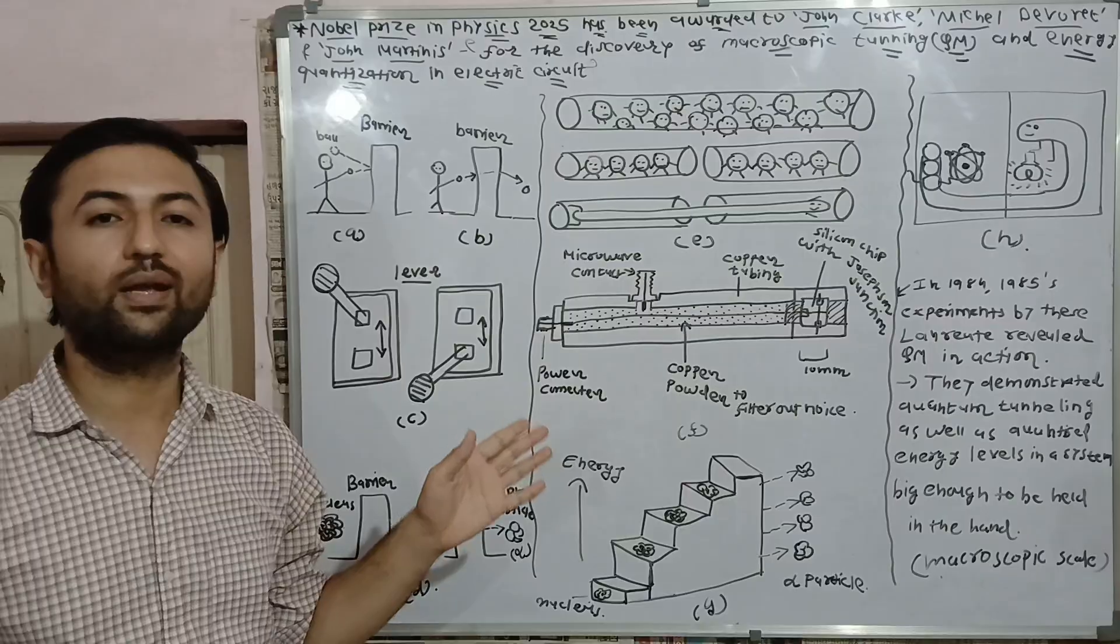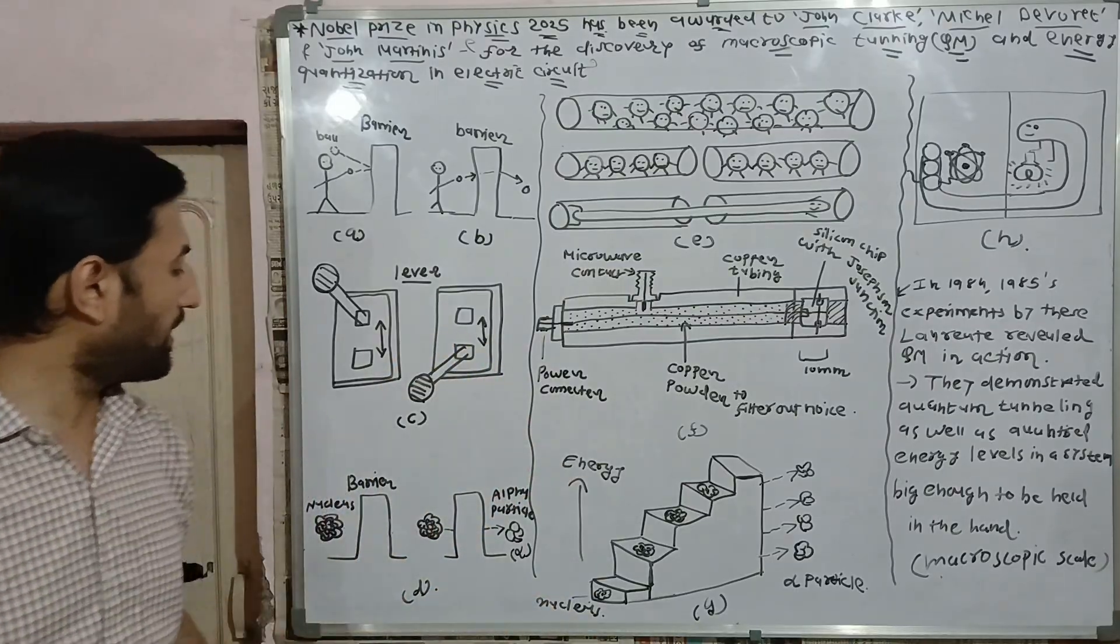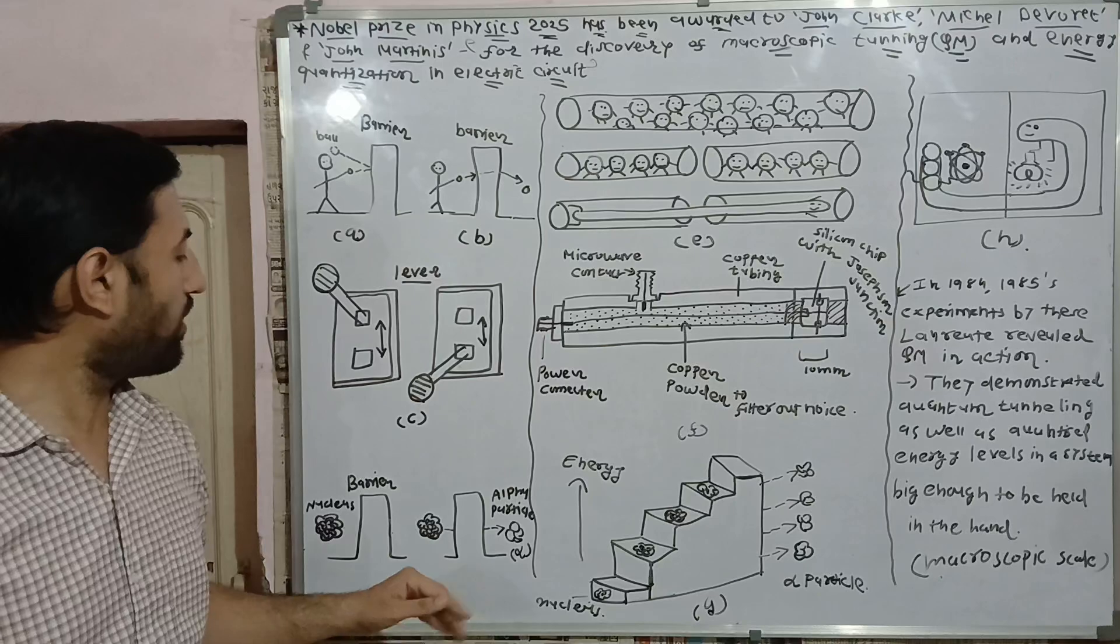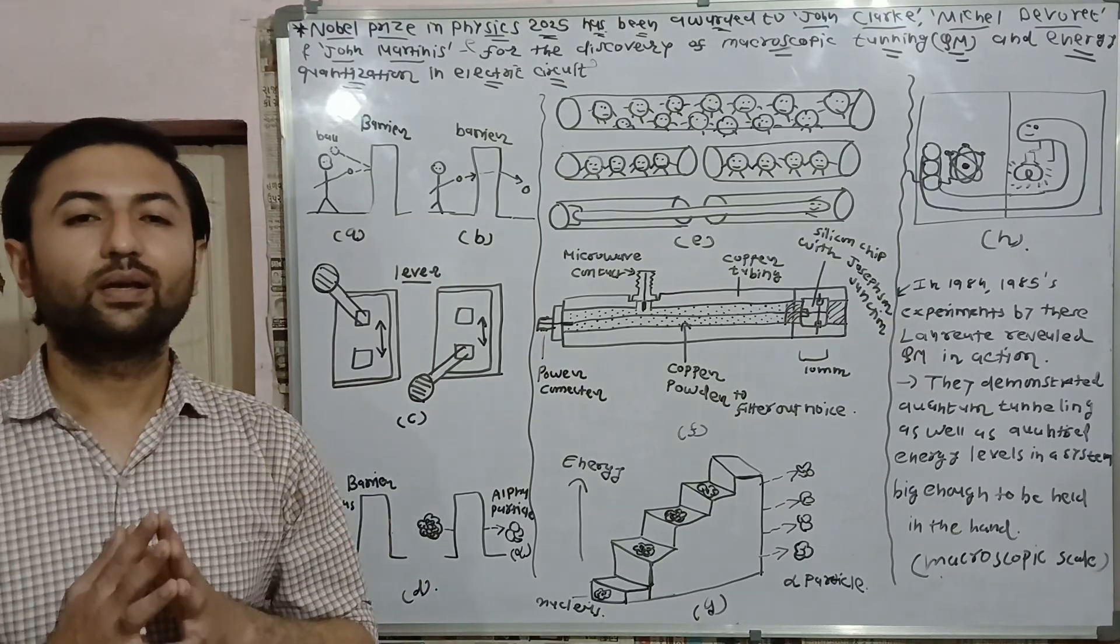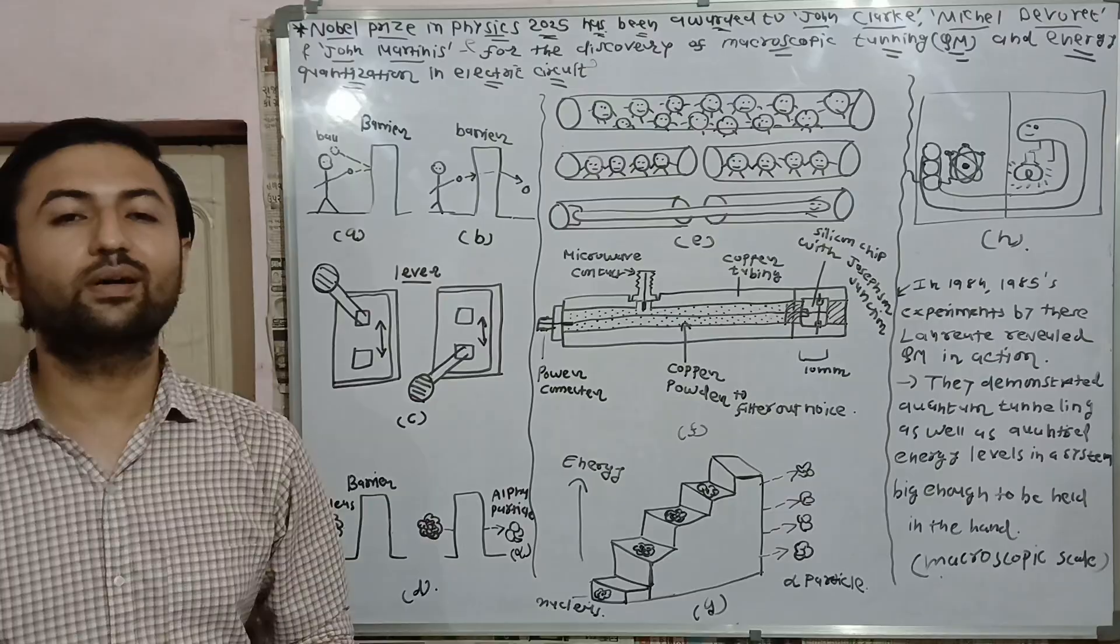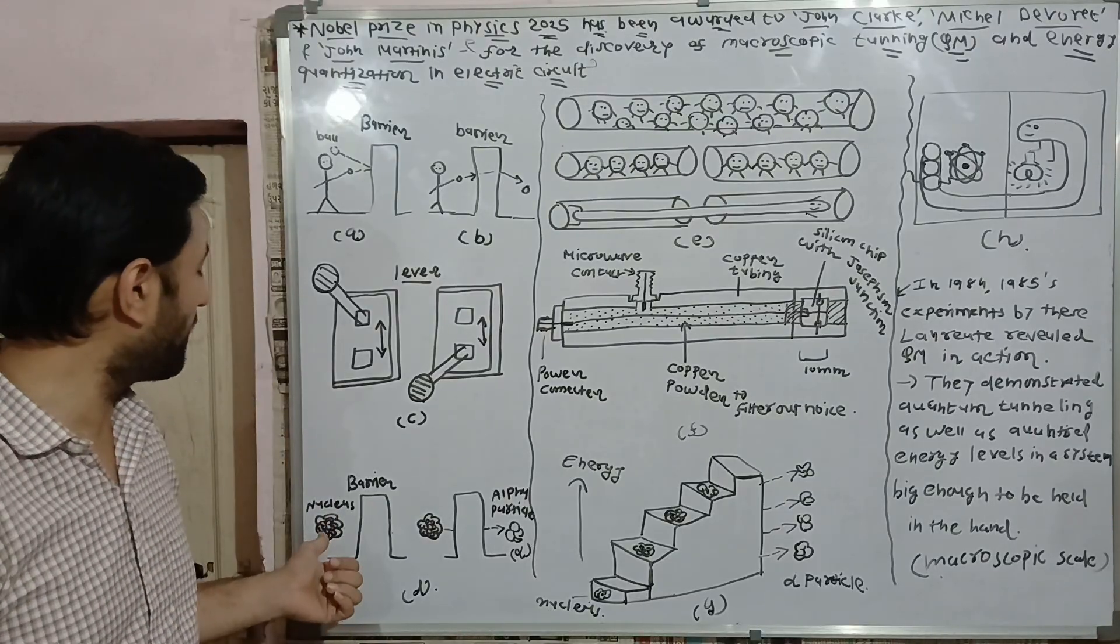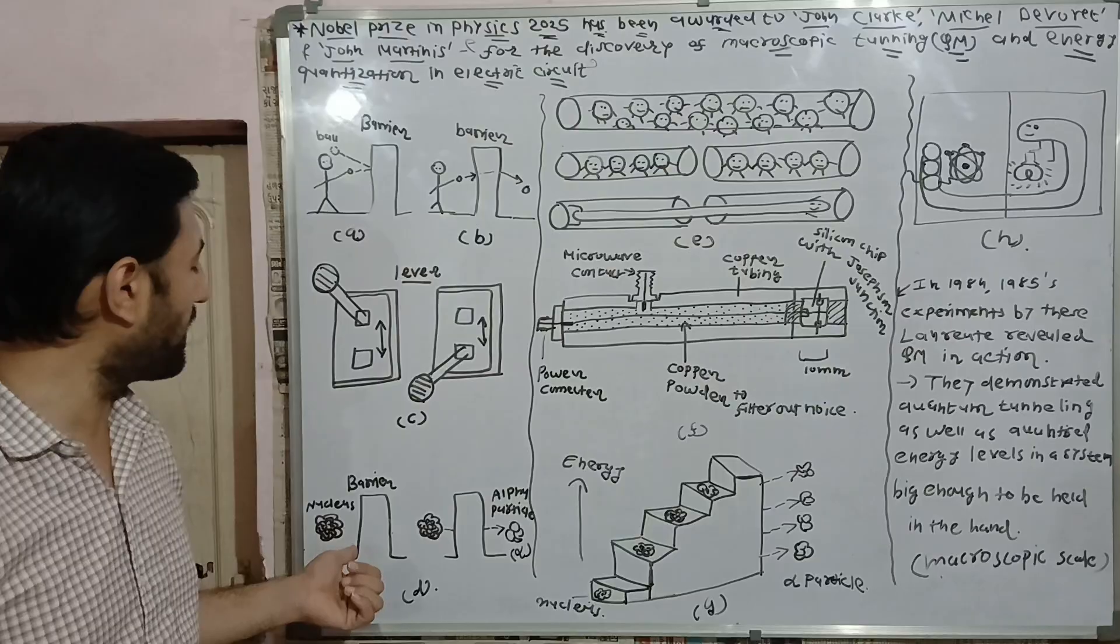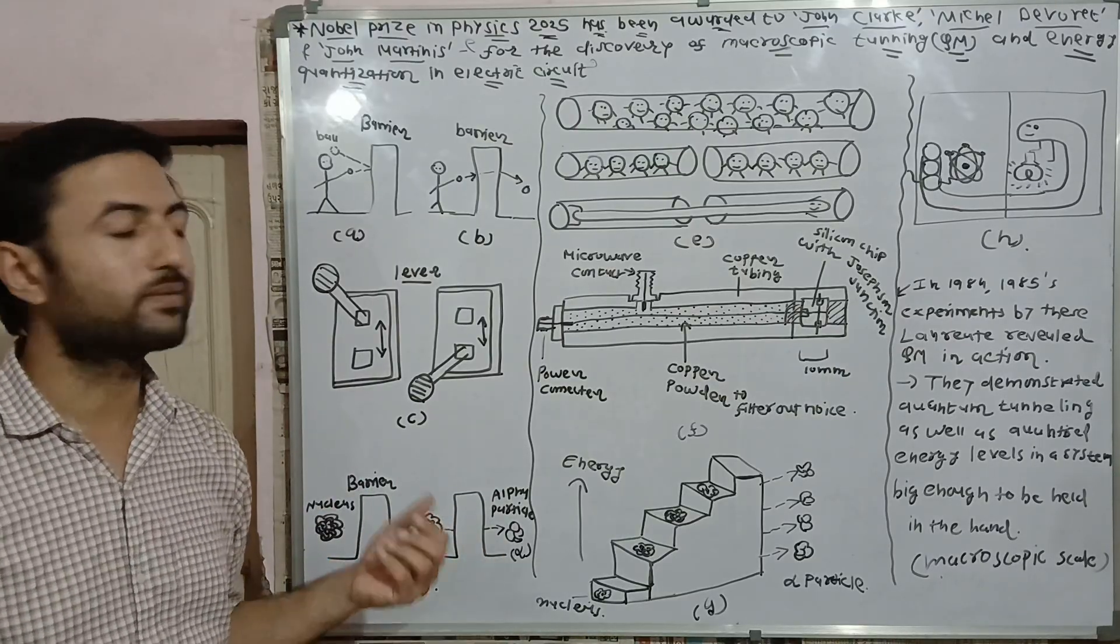If you consider quantum mechanical effect thereafter, because of tunneling this lever will come in the on state and voltage appears here. I have explained that in nuclear physics to understand alpha decay you have to consider tunneling phenomena.